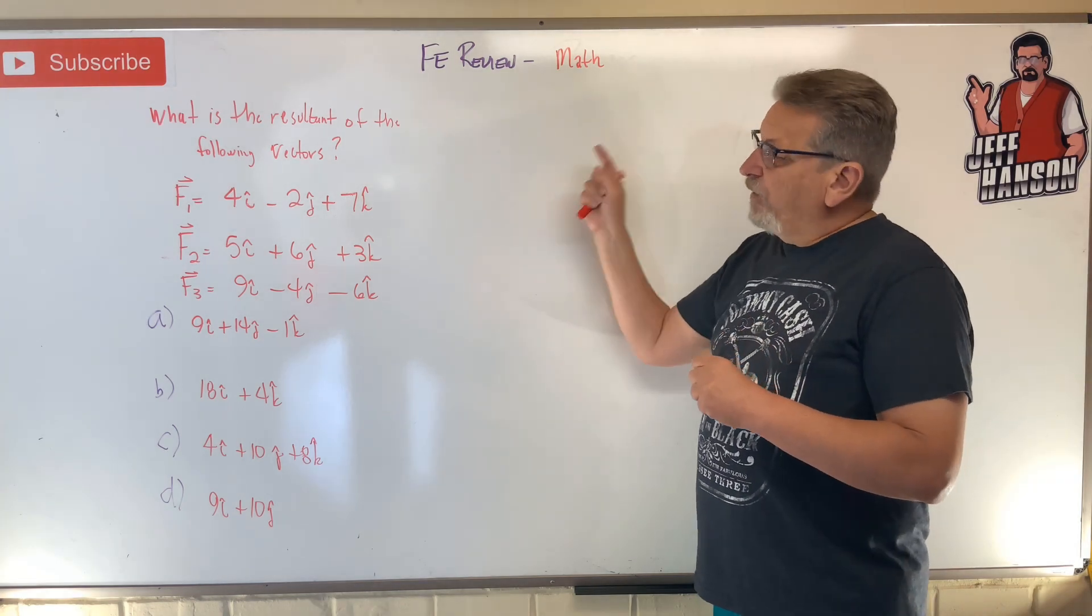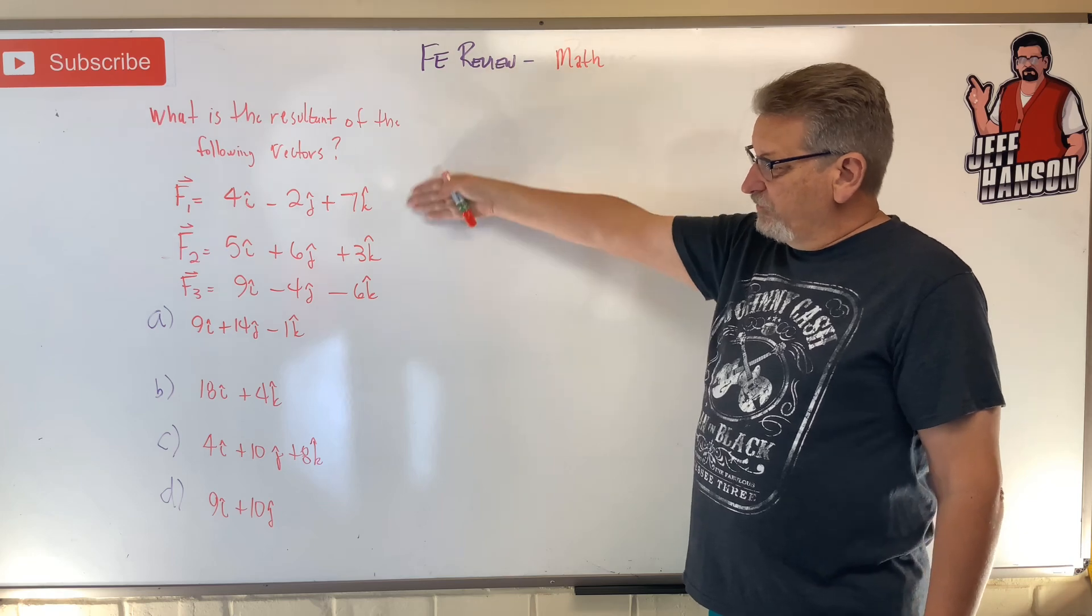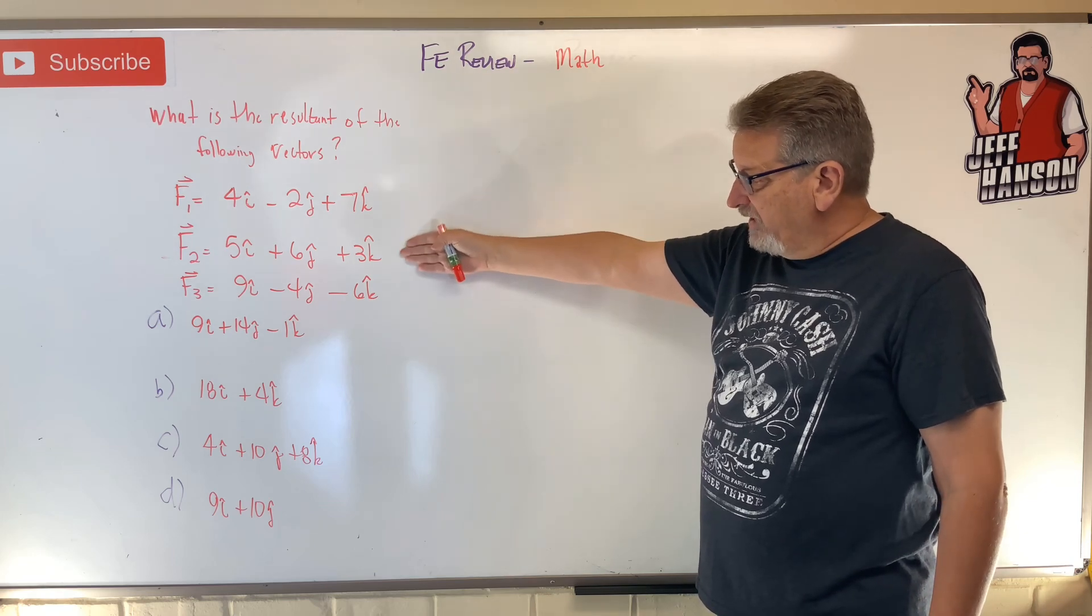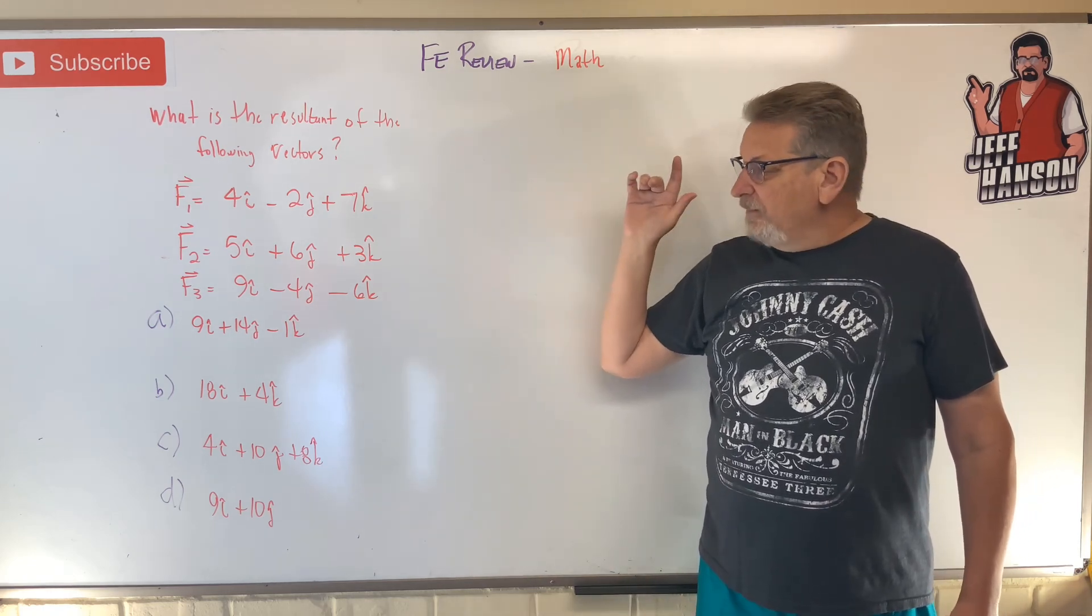Hey gang, welcome back to the review problem math. What is the resultant of the following vectors? There's your three vectors f1, f2, f3. There's your answer choices. Press pause, work it out, when you come back I'm going to show you how to do it.